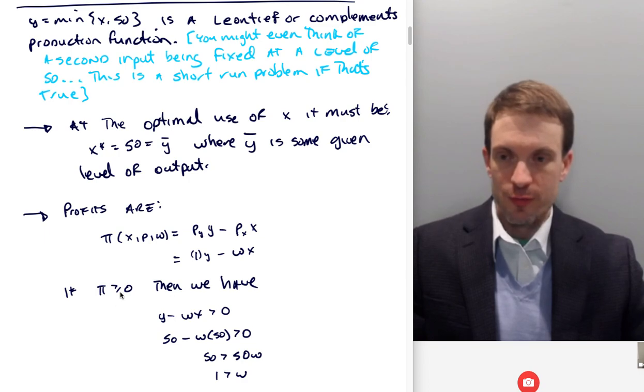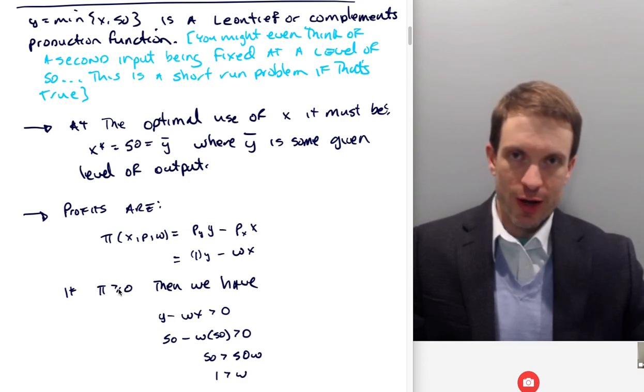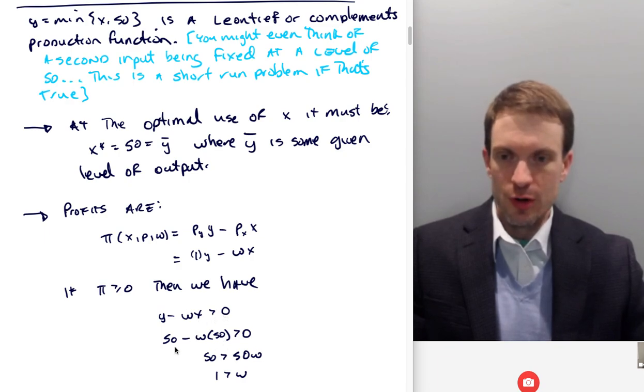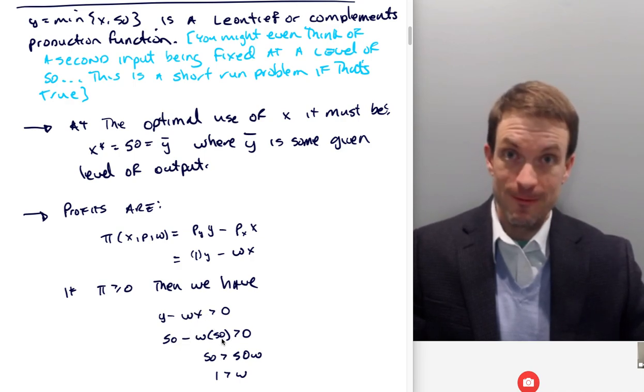Well, if we're at zero economic profit, as you would in the competitive market, or if we have positive profit, right, because you could have positive profit in the short run in a competitive market. So I'm going to say profit is greater than or equal to zero, then we must have the following. So we'd have Y minus omega X is bigger than zero, or plugging in the values we have, well, we assumed at the optimal, Y is going to be 50 and X is going to be 50. So I'm going to replace Y with 50 and X with 50. So 50 minus omega 50 is positive. And then just rearranging, we'll find that our condition for positive profits is that the input price has to be less than one.